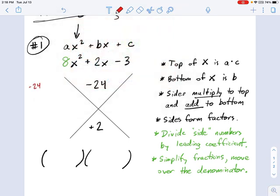So I'm going to put my negative 24 over here. And what do we have? We have negative 24 and 1, negative 12 and 2, negative 8 and 3, negative 6 and 4.